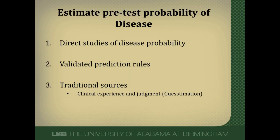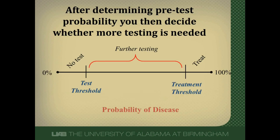The first step in choosing a diagnostic test is to estimate accurately the pretest probability of disease. There are three methods that can be used to estimate pretest probability, discussed in more detail in a previous video on the diagnostic process. Testing is really only indicated when the probability of disease — the pretest probability — falls between the test and the treatment thresholds. Outside of these thresholds, there is no reason for further testing.